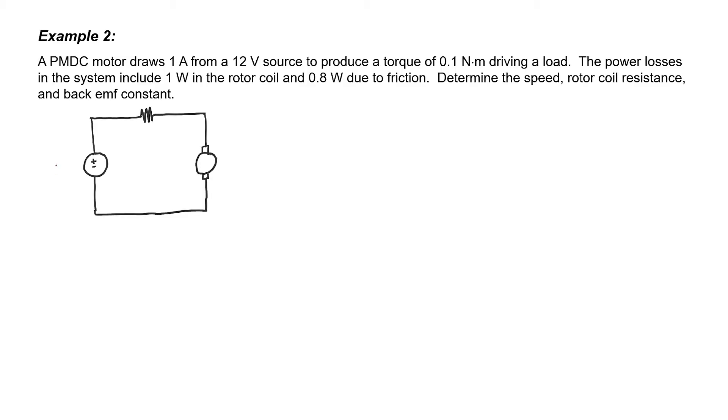Let's now take a look at a slightly more complicated example. Here we're told that one amp is drawn from a 12 volt source and we're given the torque of 0.1 N·m produced by the motor, and we're told that one watt is lost in the rotor coil. We need to find the speed, the rotor coil resistance, and the back EMF constant. The rotor coil resistance is probably the easiest to find. Power burned up in a resistor is just I squared R. The rotor coil resistance is just 1 ohm.